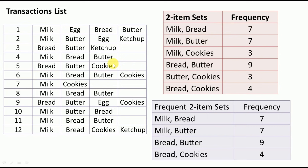Milk and butter also appear together in transactions 1, 2, 4, 6, 8, and others, giving a frequency of 7 as well. Similarly, we count each two-itemset's frequency across all 12 transactions.